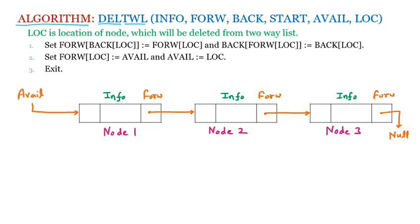There is one more pointer — the backward pointer. However, in the available list, the backward pointer has no meaning. The available list cannot be a header list or a two-way list; it only works in one direction. So even though our nodes have three parts, the available list only works with the forward pointer — it is a one-way list.